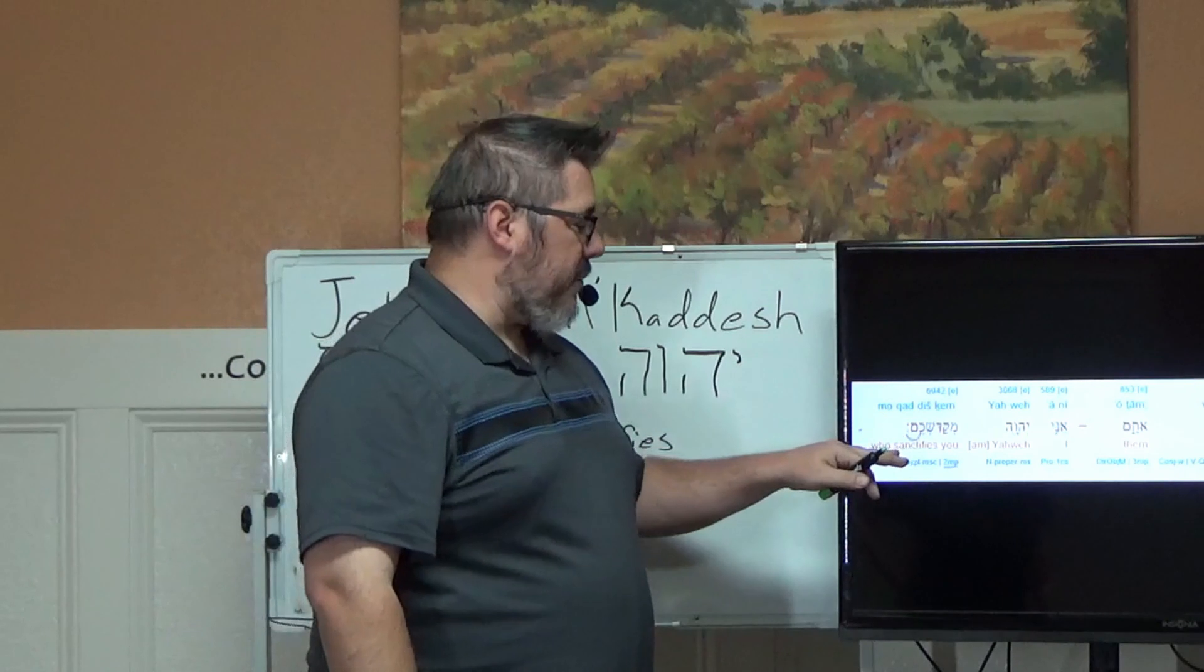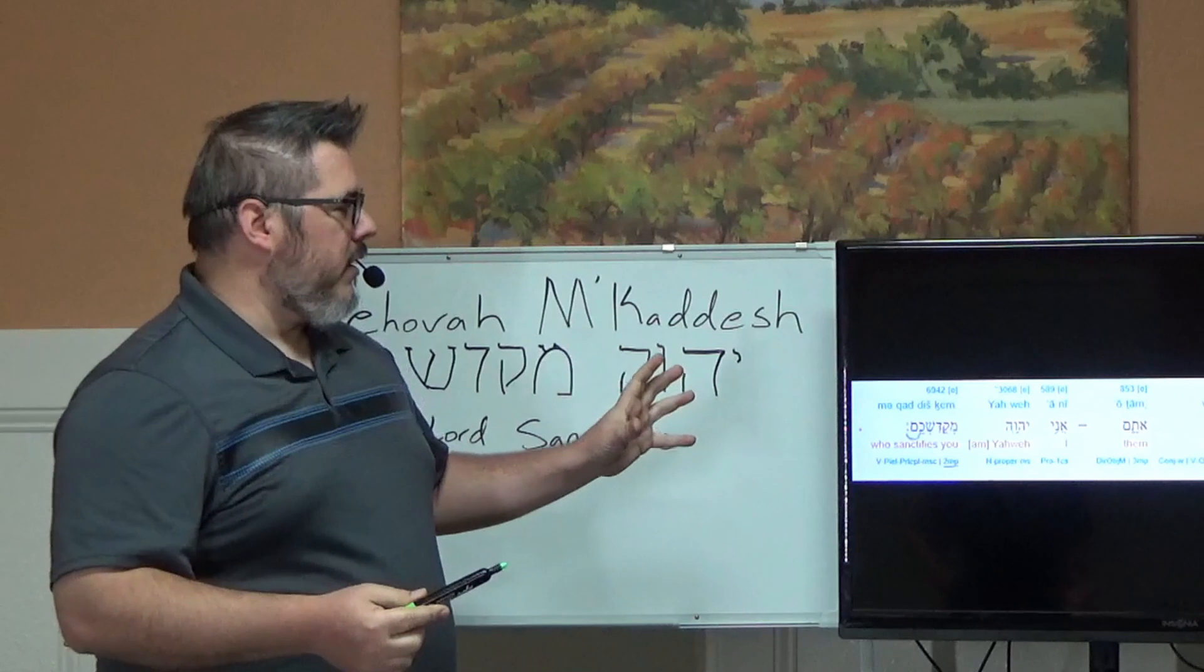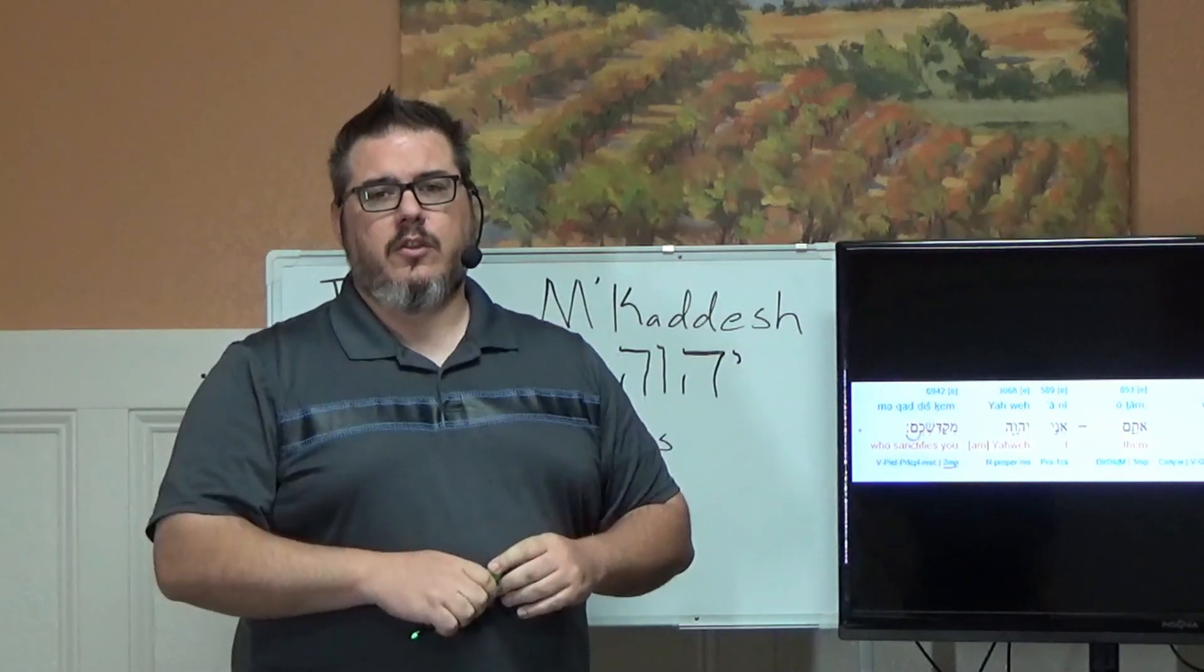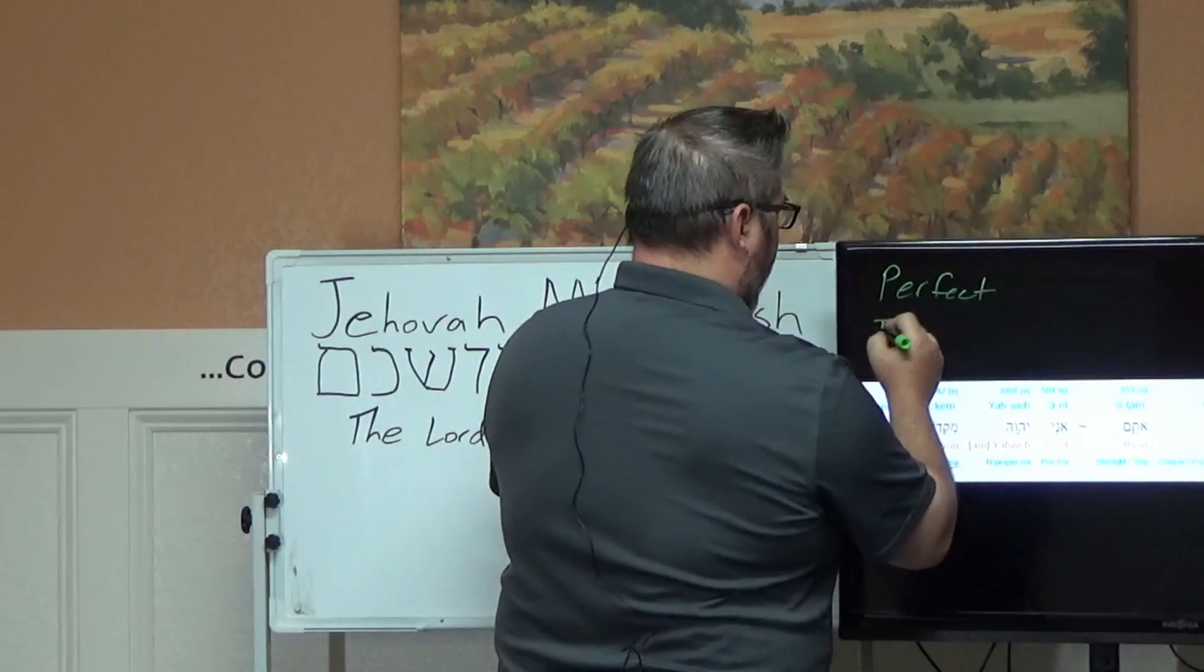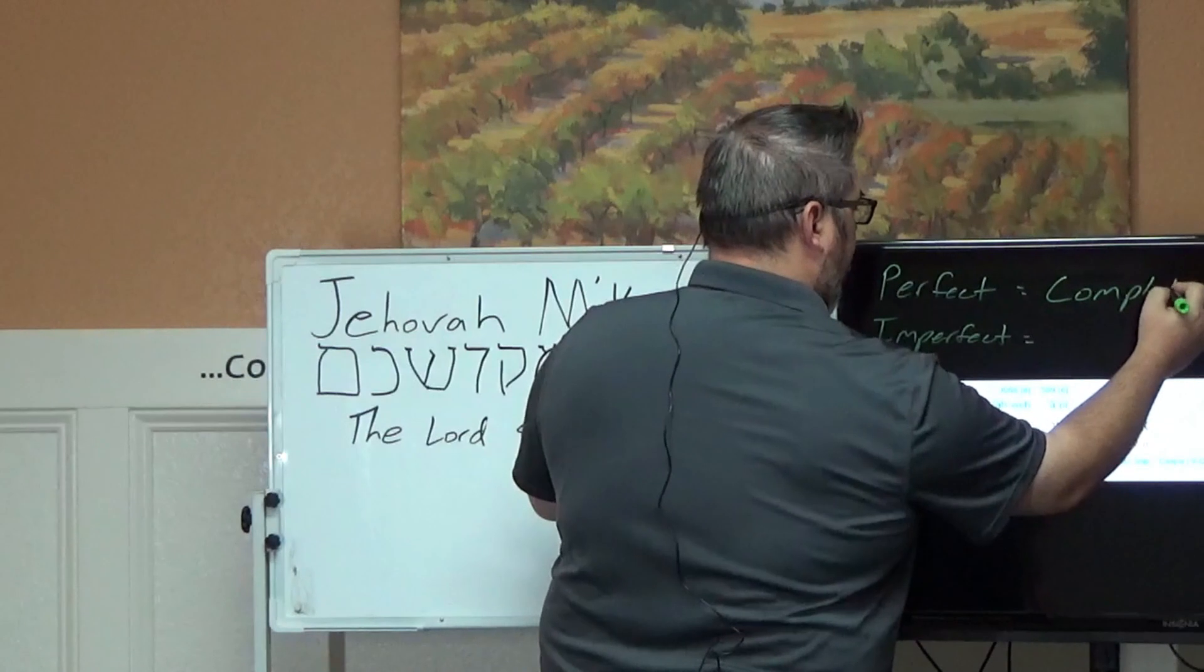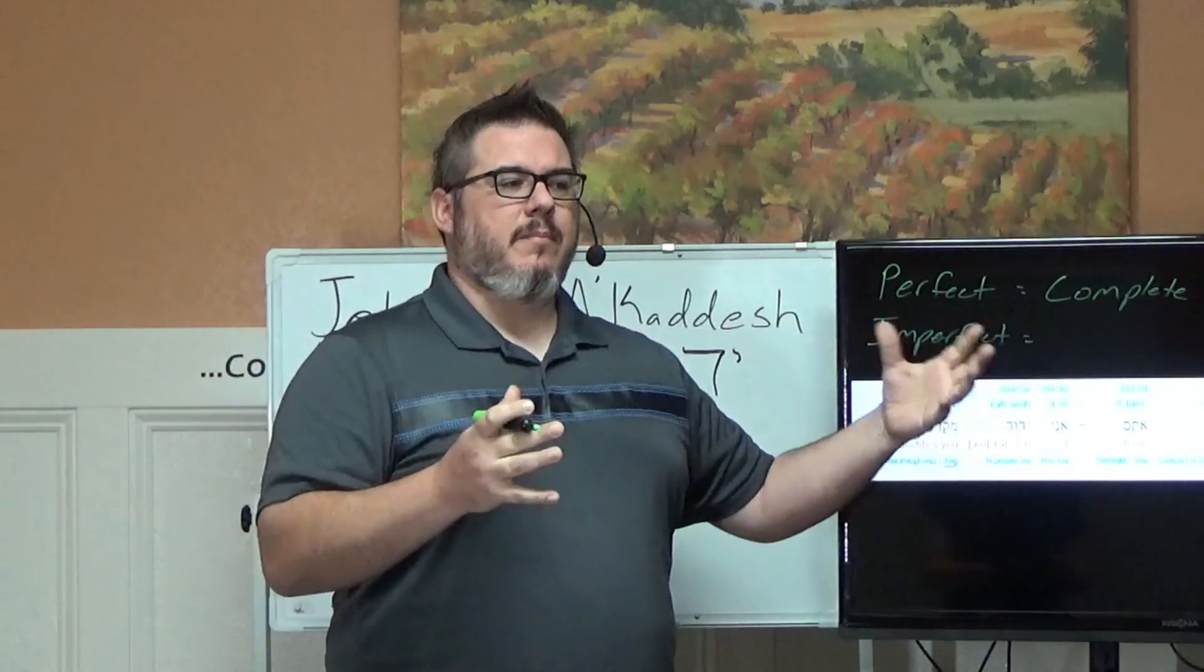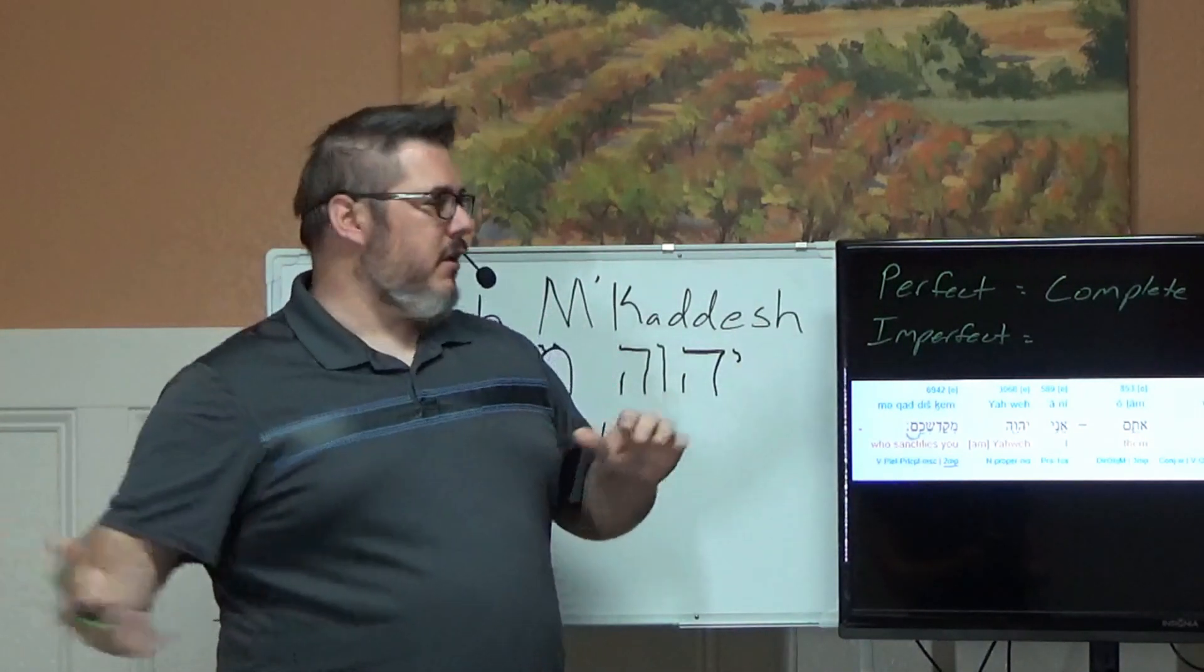Now another interesting thing about this, and we haven't gotten into verb tenses an awful lot in this, but I do want to delve into it a little bit because we've talked before about the perfect and the imperfect. Those are really the two main tenses that you see in Hebrew. The perfect denotes a complete action. This is something that we might consider our past tense, but it's not necessarily a past tense. It's something that's completed.